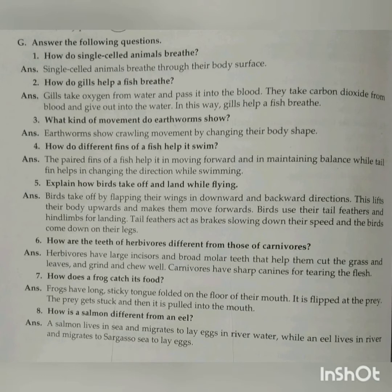Question number seven: how does a frog catch its food? Answer: frogs have a long sticky tongue folded on the floor of their mouth. It is flung at the prey, the prey gets stuck, and then it is pulled into the mouth.